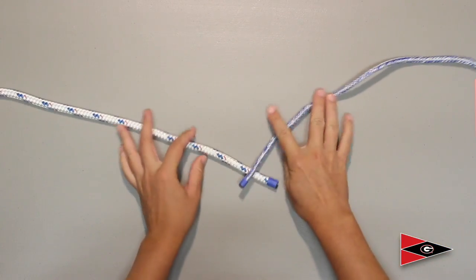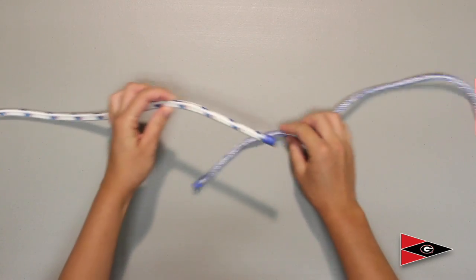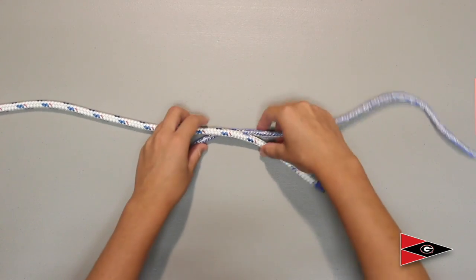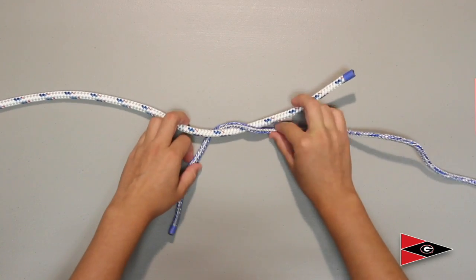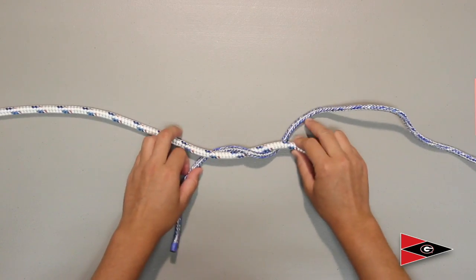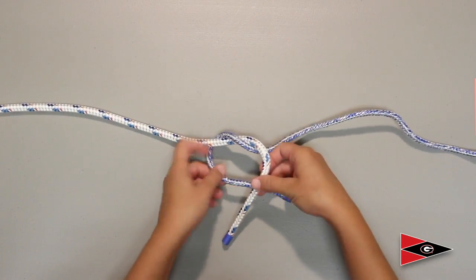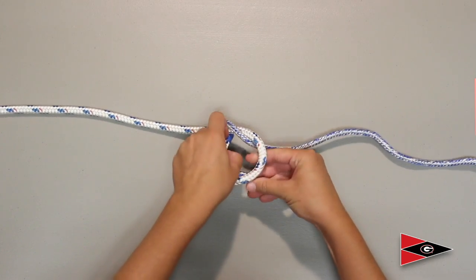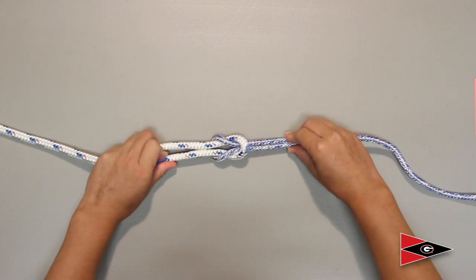You don't have to go right over left to start your square knot. You can also go left over right. Do your cross under or over just like you're tying your shoes. And then right over left. But whatever you do first, you must do the opposite of in the second step.